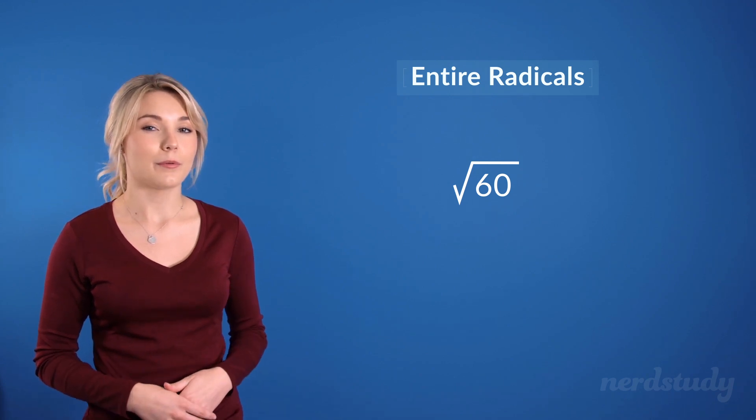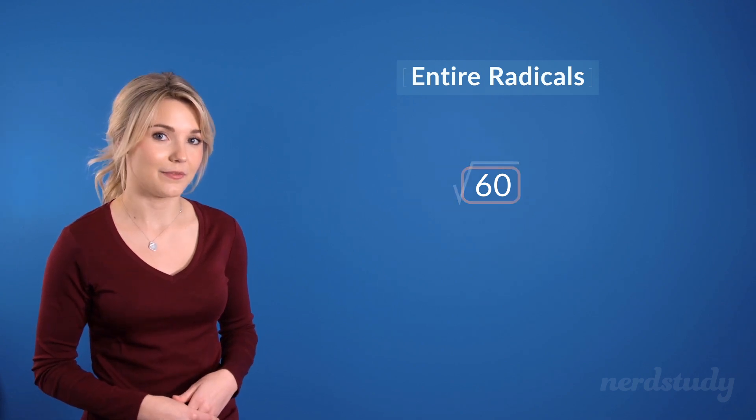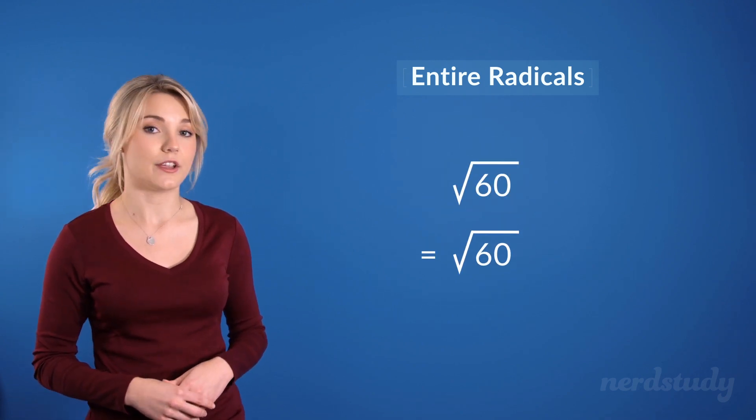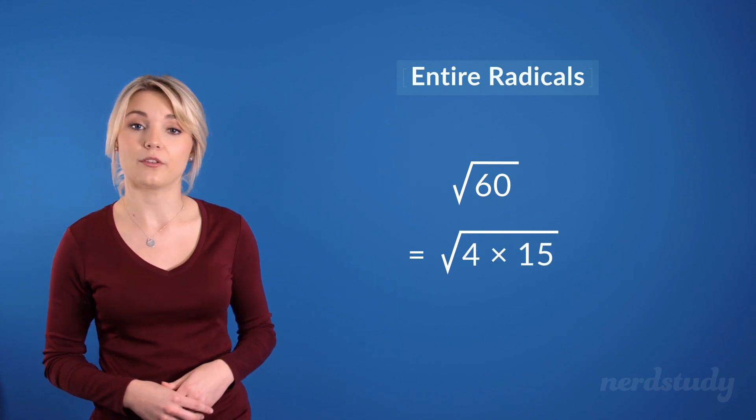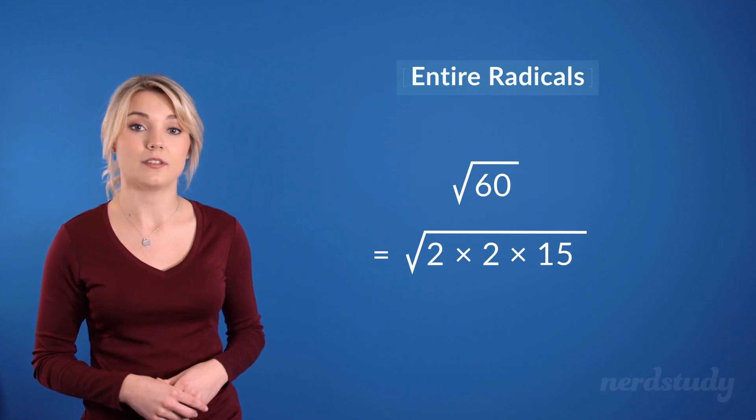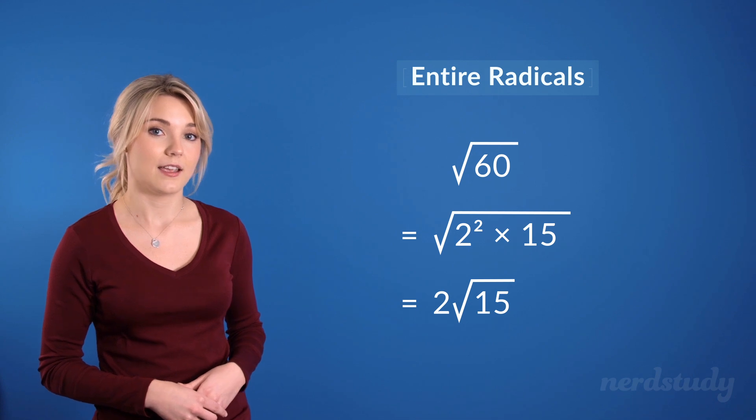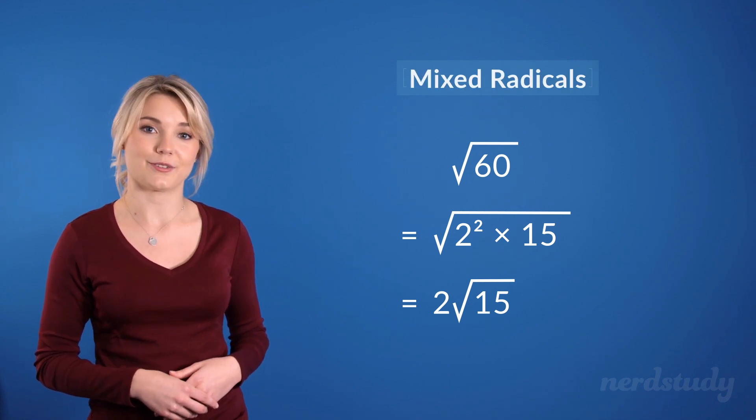But as we probably already know by now we can factor out perfect squares within a radical symbol. Since 60 is no different from 4 times 15 we can write it like this and since 4 can also be written as 2 to the exponent of 2 we can factor it out to get 2 root 15. Now this form is called a mixed radical.